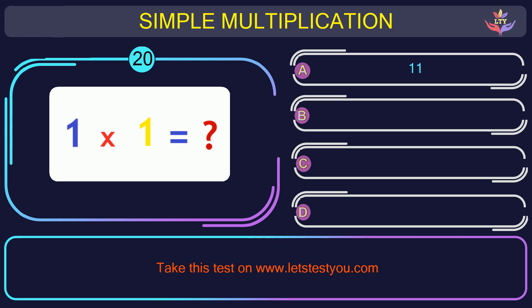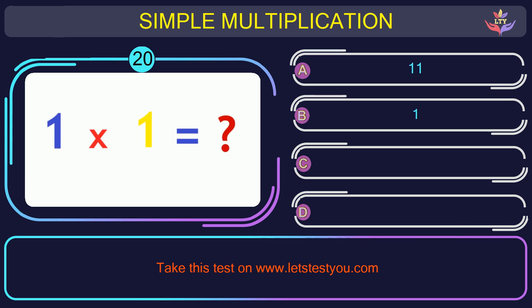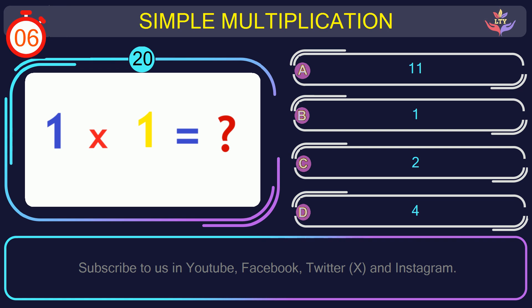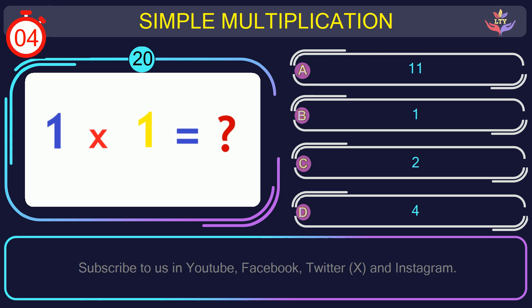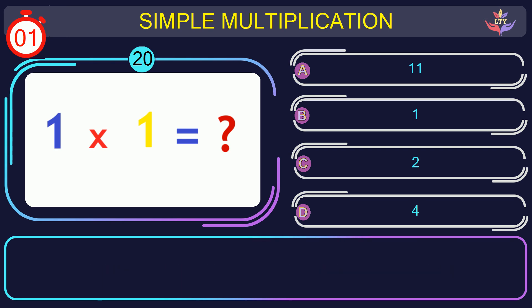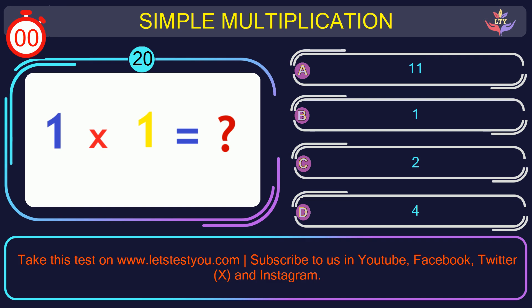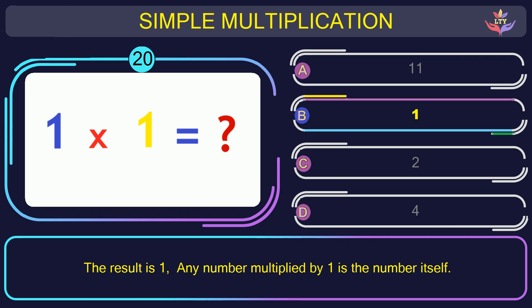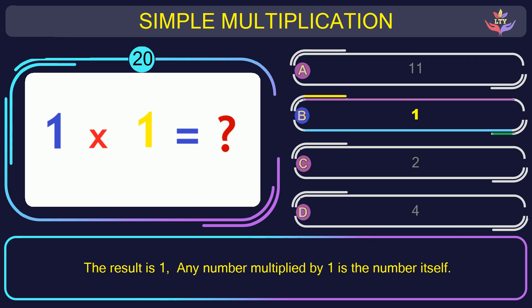Question number 20: could you guess the result when you multiply 1 and 1? The correct answer is option B: 1. The result is 1. Any number multiplied by 1 is the number itself.